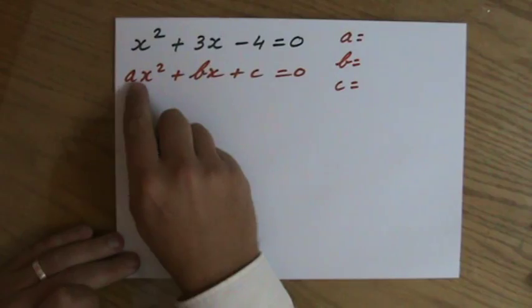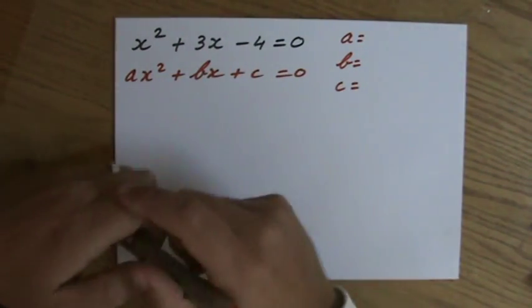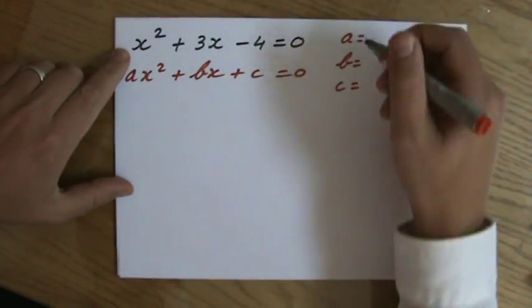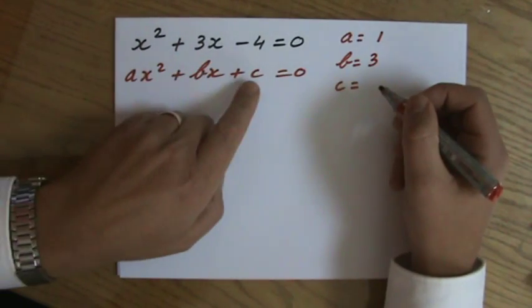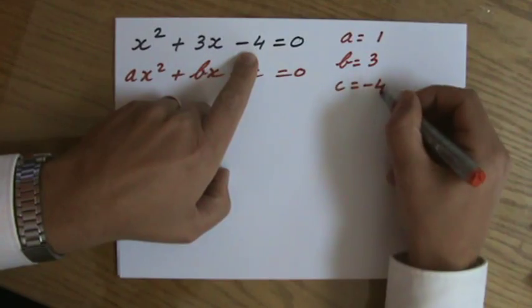Now how much is a? a is the coefficient of my x squared, the term of x squared. What is my a? It is 1. What is my b? My b is 3. And what is my c? Minus 4.